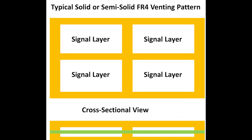For RO4450F prepregs, which are not capable of significant lateral flow, the vertically stacked copper layers define thickness spacing between layers and create volumetric fill requirements that the high melt viscosity adhesive system can't achieve. Hence, poor adhesion and voiding can occur at the bond lines.